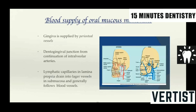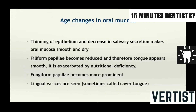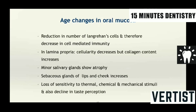You should know the blood supply and nerve supply of the oral mucous membrane. Age changes include thinning of the epithelium and decrease in salivary secretion making it smooth. There may be atrophy of papillae usually in nutritional deficiencies and lingual varicosities may form. There may also be atrophy of salivary glands with loss of taste sensation.